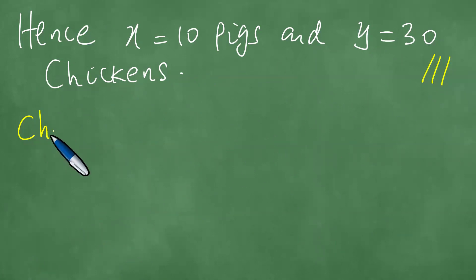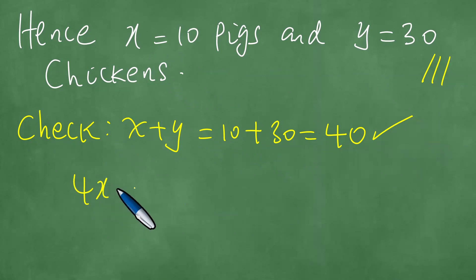We know that X plus Y must be 40. Let us check here. X is 10 and Y is 30, so that indeed we have 40 pigs and chickens in the farmyard.